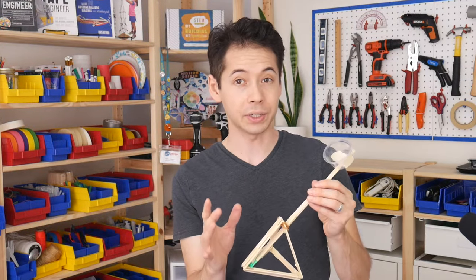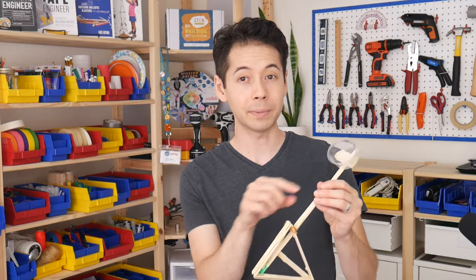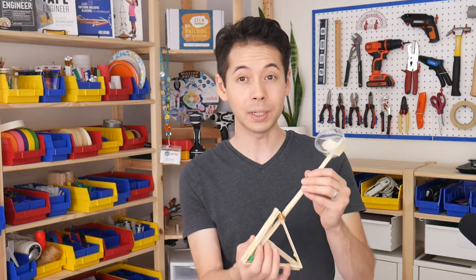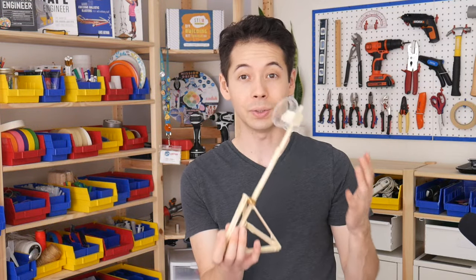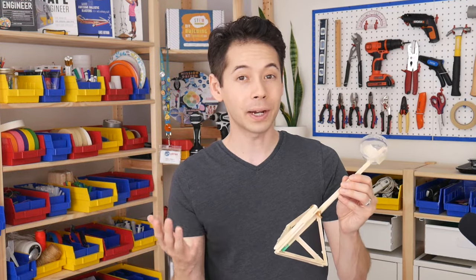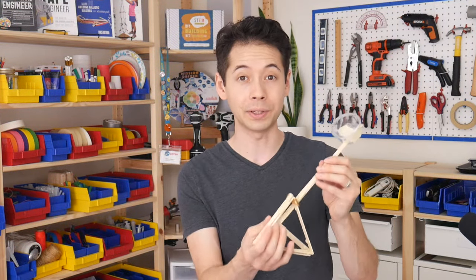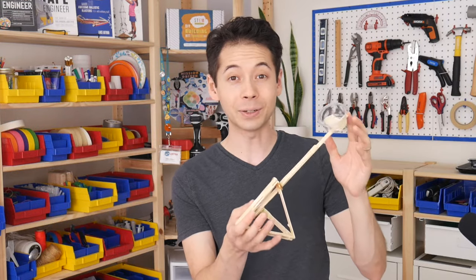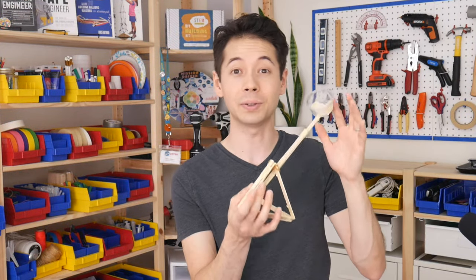However, it does take more energy to get something that's farther away from that point of rotation to move. So if you're not satisfied with how far your catapult is flinging, you can add on more rubber bands. That, in turn, may require you to reinforce the frame with more tape. So definitely tinker with how sturdy and powerful you can make your pyramid catapult.